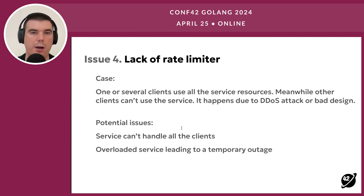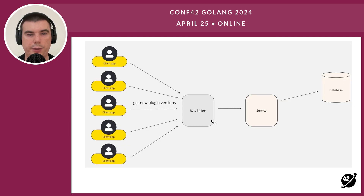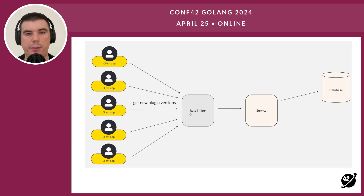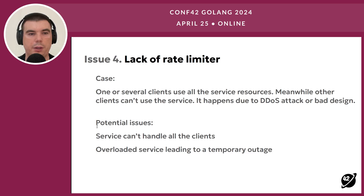The next issue is lack of a rate limiter. Let's consider the same previous example — bad design on the client side. But let's also imagine we added a rate limiter before our service. In this case, even if there is bad design on the client side, our rate limiter won't let client apps overload our service, because we can specify a rule on the rate limiter side — for instance, no more than 2000 RPS. Plus, we can restrict a particular user from sending too many requests.